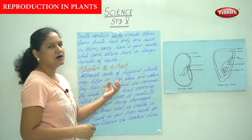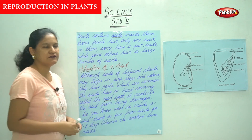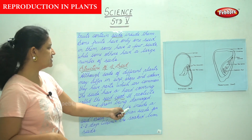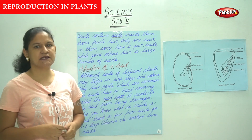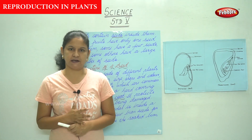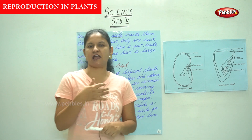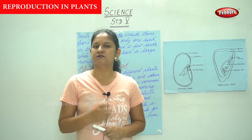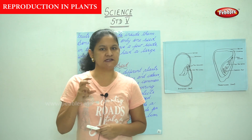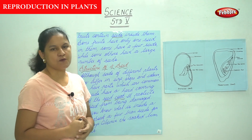The seeds have a hard covering called the seed coat, which protects the seed from being damaged. Just like our body is covered by skin to protect the internal organs — the flesh and bones — in the same way, the seed has a hard outer covering called the seed coat, whose purpose is to protect the seed from being damaged.